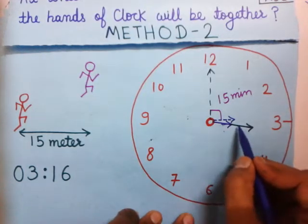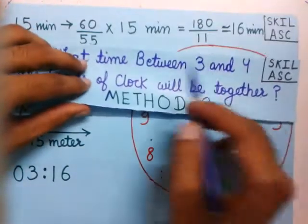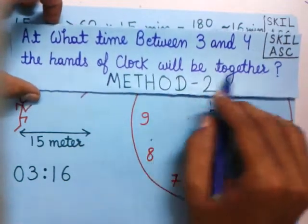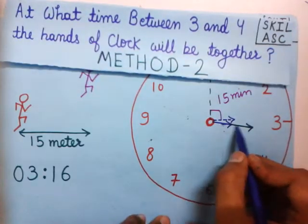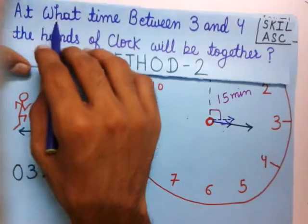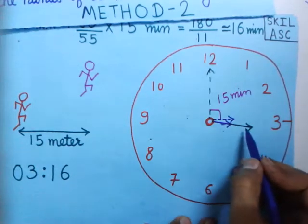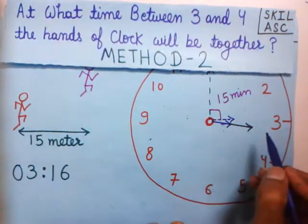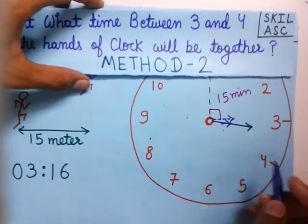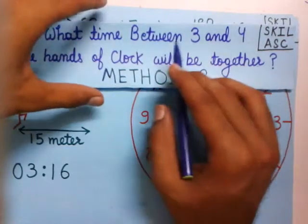The hour hand and the minute hand are showing the time is between 3 and 4. The next condition is the hands of the clock must be together. If you observe, the hour hand and the minute hand are together. We have to find the exact time at which these hands are together, though at least we know that the time is between 3 and 4.